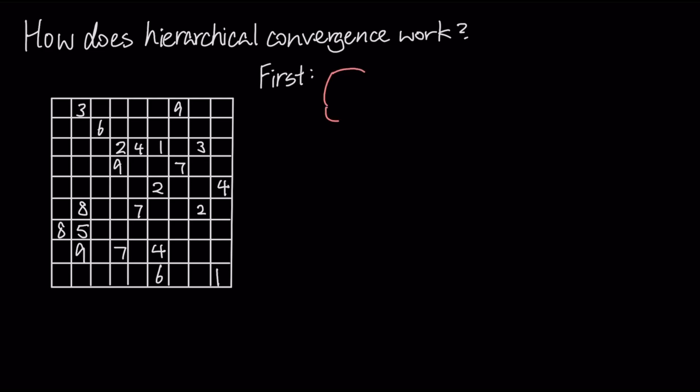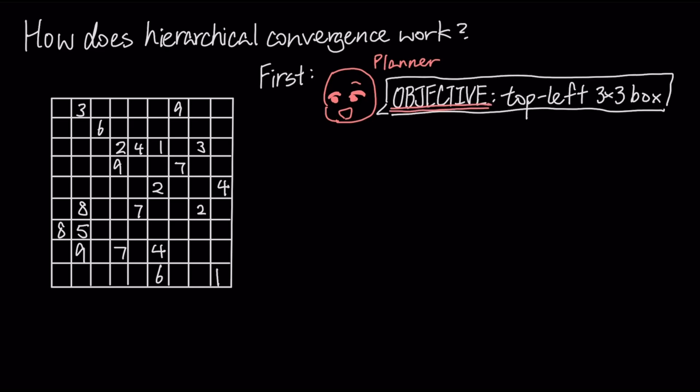First, the high-level planner module sets a sub-goal, like solve the top-left 3x3 box. It doesn't focus on the individual numbers, just the overall objective.